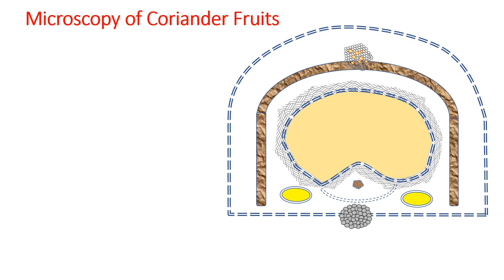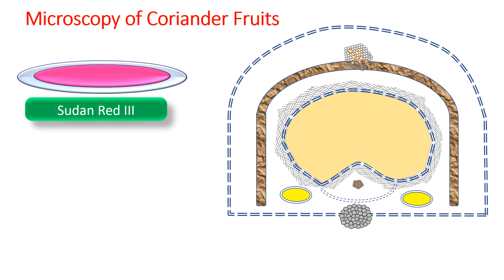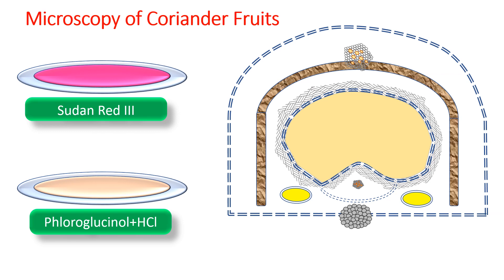Regarding the staining of coriander fruits, two dyes are majorly used. One is Sudan Red 3 and the other is fluoroglucinol HCl. On staining the transverse section with Sudan Red 3 and washing with water, the cuticularized epicarp takes up a red color. The vitae, which secrete the volatile oil, are also stained red.